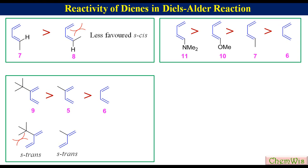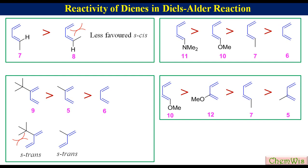Generally, substituents at position 1 have a larger reactivity effect than substituents at position 2. For example, compound 10 with a methoxy group at position 1 has higher reactivity than compound 12 with the same methoxy group at position 2. Due to the same reason, compound 7 has higher reactivity than compound 5.